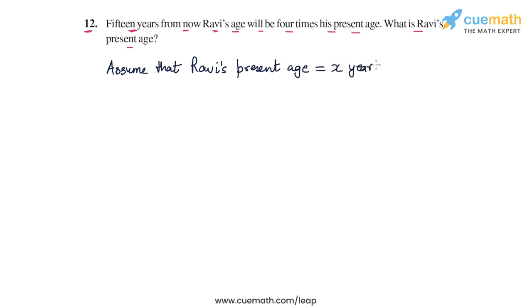Now what will be Ravi's age 15 years from now? If today his age is x years, then 15 years later his age will be x plus 15 years.